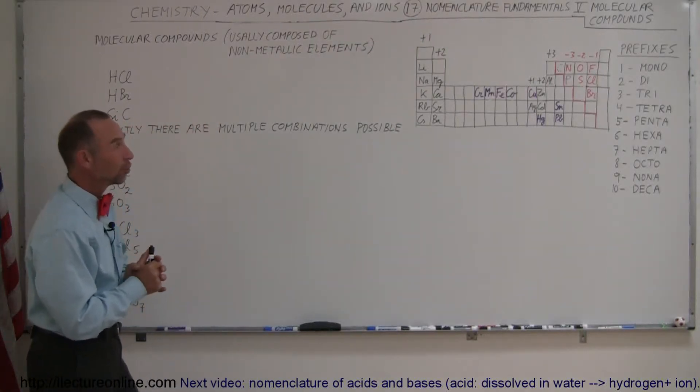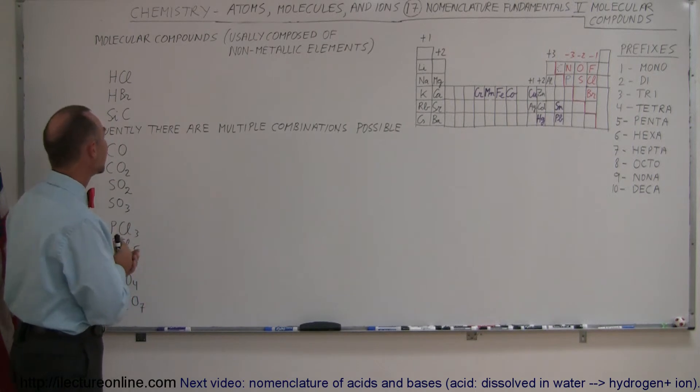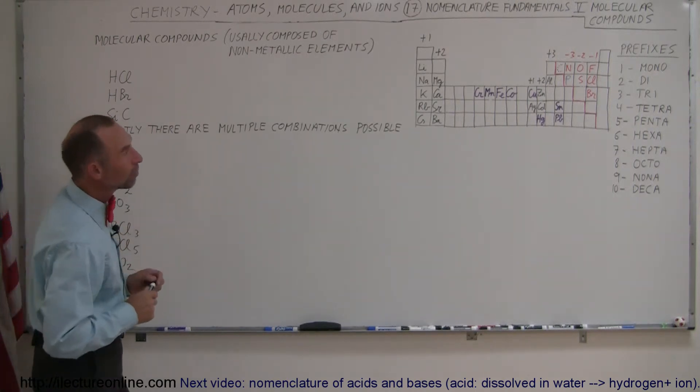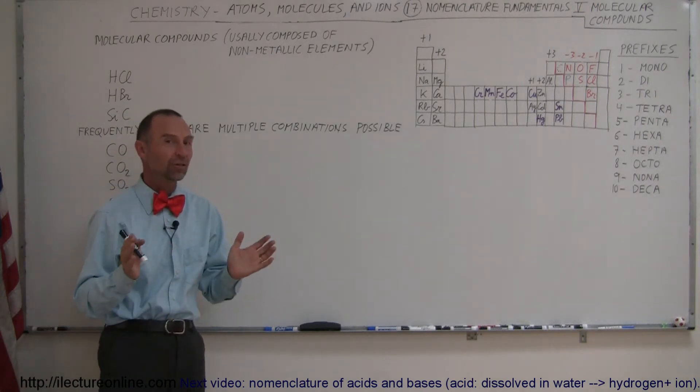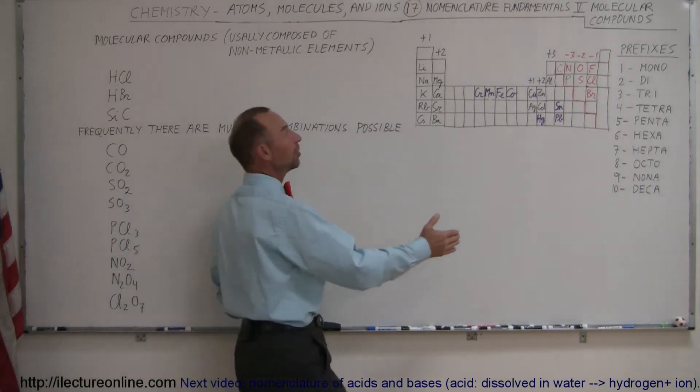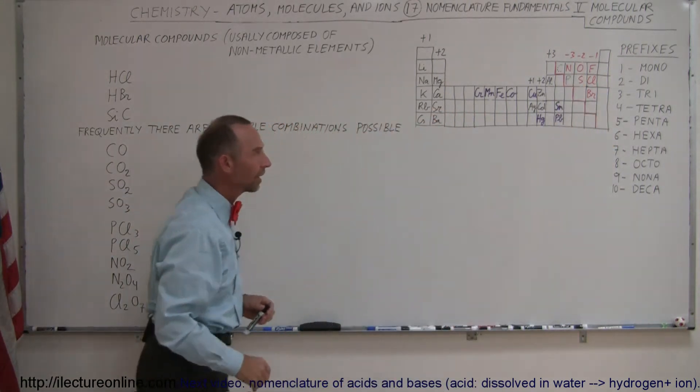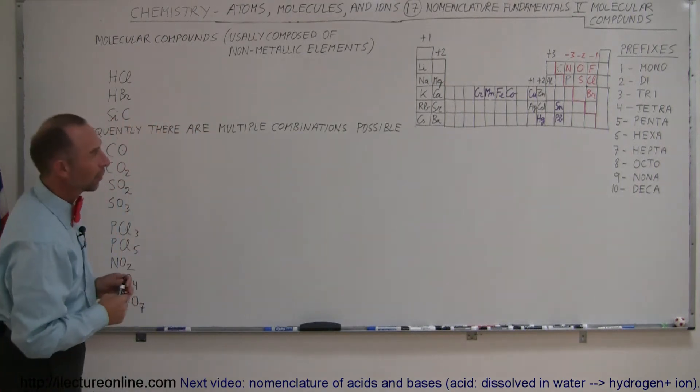We're continuing with the nomenclature fundamentals, trying to name different combinations of elements that form molecules. Here we're going to deal with molecular compounds—these are actually molecules, not ions. Typically, molecular compounds are built off the non-metals, so they form from the non-metal region of the periodic table to the right of that dashed red line there.